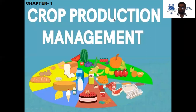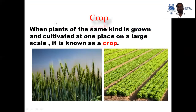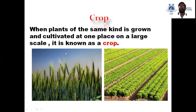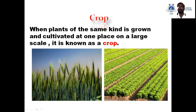As the chapter name is crop production and management, the first question that comes to mind is: what do you mean by the word crop? The crop means when plants of the same kind are grown and cultivated at one place on a large scale, it is known as a crop.